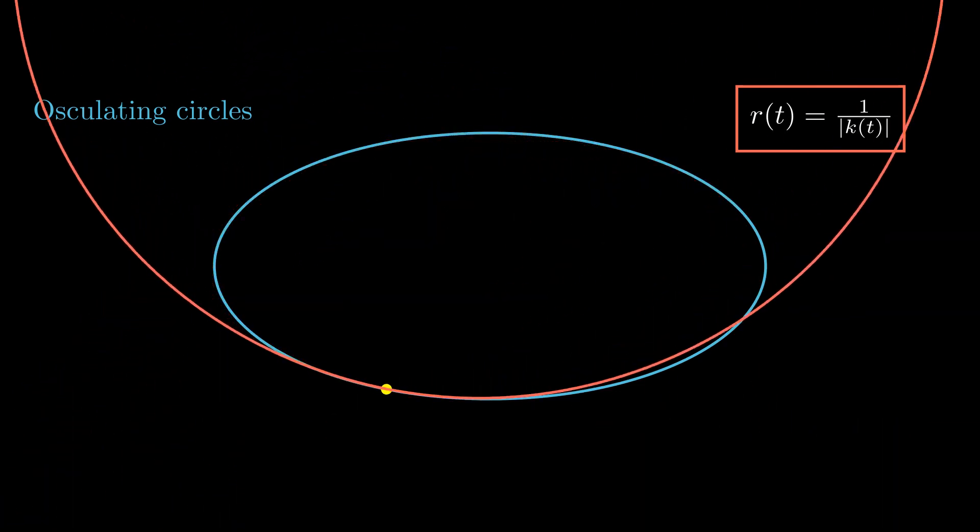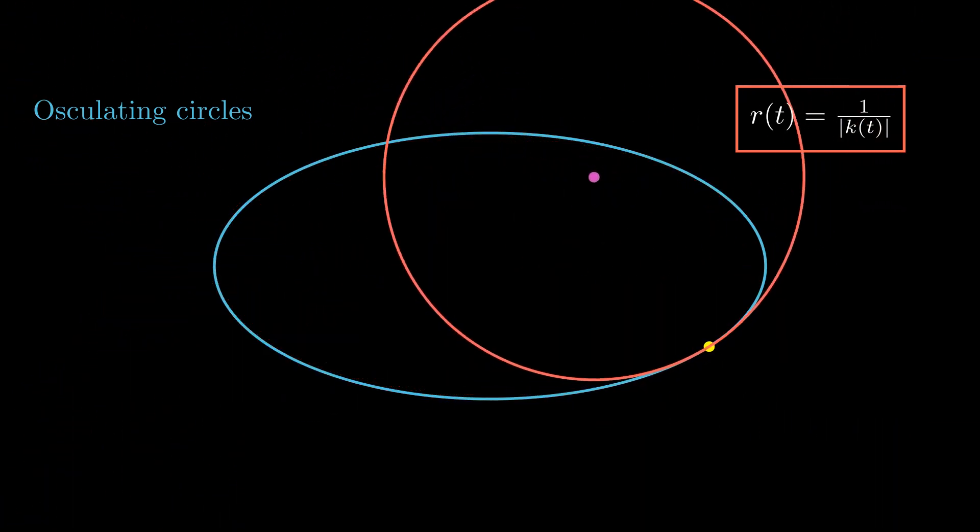This circle is called the osculating circle of the curve gamma at gamma of t. Notice that the radius of this circle is precisely 1 over the absolute curvature of gamma time t, and it degenerates to a line when such curvature is zero.